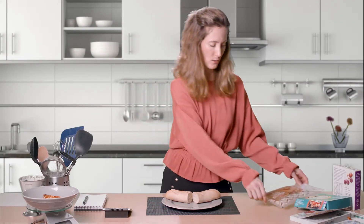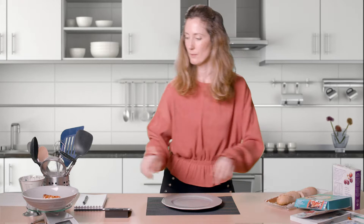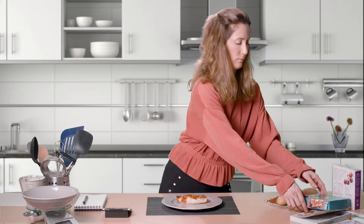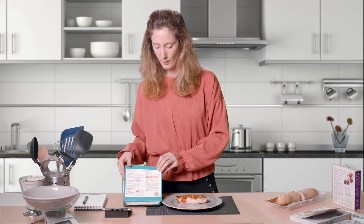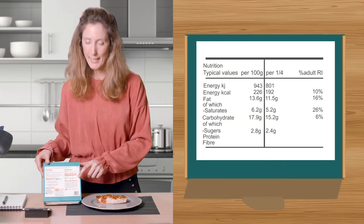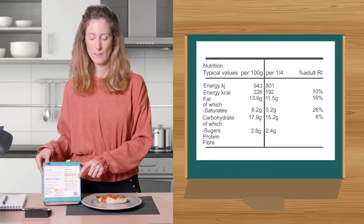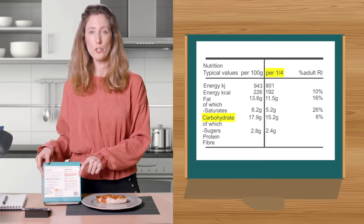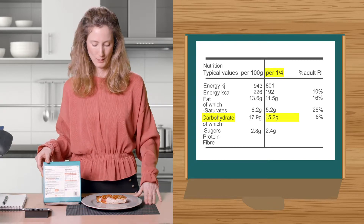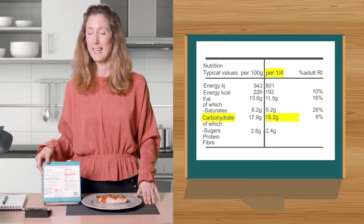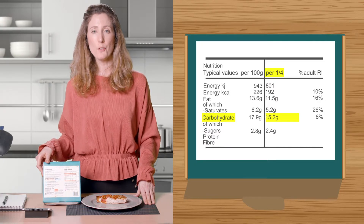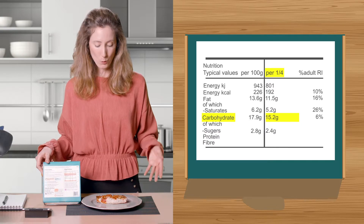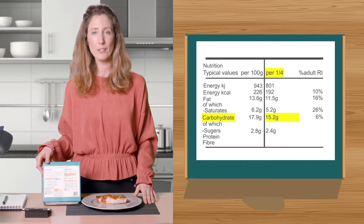Let's look at the quiche. I'll get the label, find the nutritional panel, and read the carbohydrate. On this label there's a column that tells me what's in one quarter of the quiche, but my serving isn't one quarter. So for me to know the carbohydrate in my serving I need to weigh my quiche and calculate the carbohydrate.